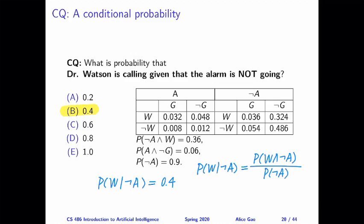Normally, we would have to go back to the joint distribution to calculate both the numerator and the denominator, but luckily for us, or because of my awesome design of the clicker questions, I already asked you to calculate both quantities in the previous slides. So you can use them directly. This is equal to 0.36 divided by 0.9, which is 0.4.